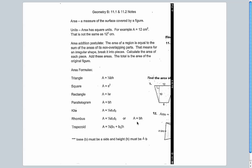Sections 11.1 and 11.2 go together pretty nicely because they both talk about surface area. Area is a measure of the surface covered by a figure. Area has square units. For example, the area may be 12 centimeters squared. There's a big difference between that and 12 squared centimeters — 12 squared centimeters means 144 linear centimeters, while 12 centimeters squared means square centimeters, so it covers the surface.